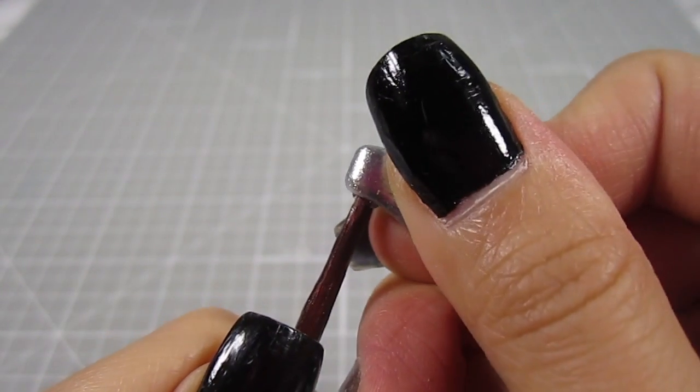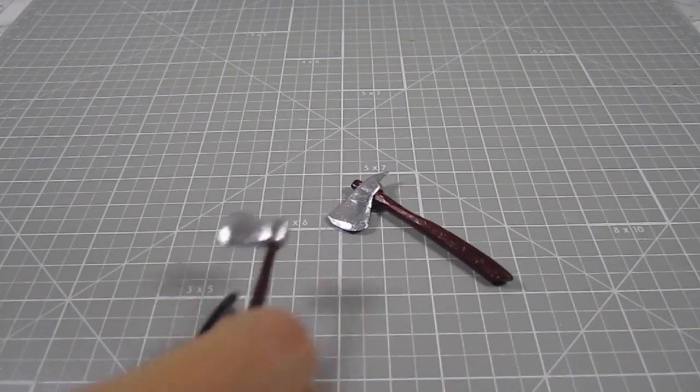I also made some smaller heads without the point in the back for some shorter handles. It's the exact same process.